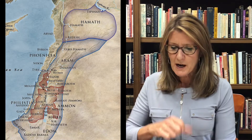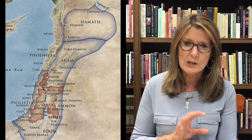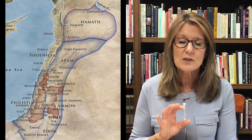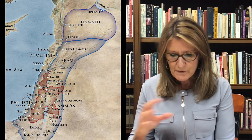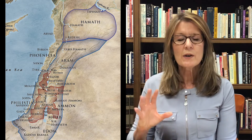As we look at the period of the united kingdom, take out your map. The map of the united kingdom shows Saul's kingdom, then David's, then Solomon's. Saul's is very small; David's extends significantly, and the kingdom extends even further north with Solomon. The following map will show the divided kingdom, but for now we stay with the united monarchy — David and then Solomon.